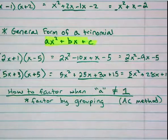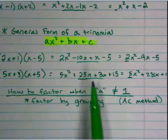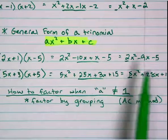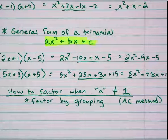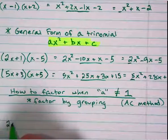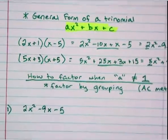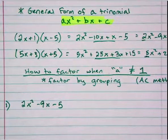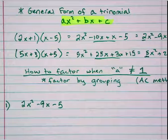With the AC method, we're going to work backwards. When we originally did our double distribution, we ended up with 4 terms where the middle 2 terms combined to give you the middle term. We're going to work backwards and create those 4 terms. Let's do an example. If I give you 2x squared minus 9x minus 5, I recognize there is no GCF, it's not difference of perfect squares, and a is not equal to 1. So we're going to do this factor by grouping.